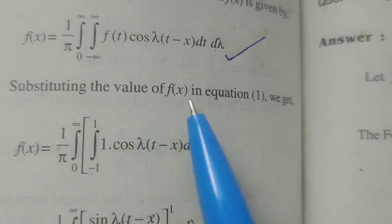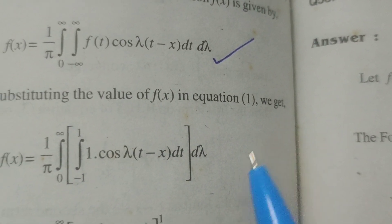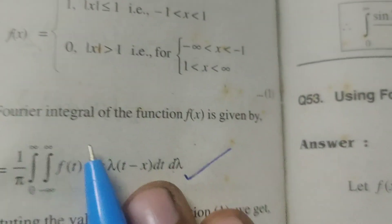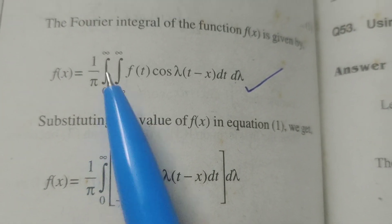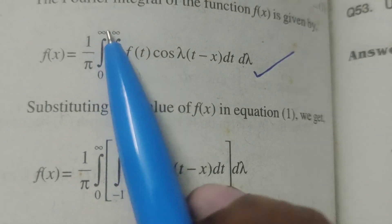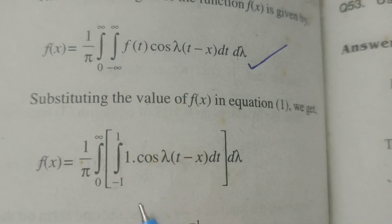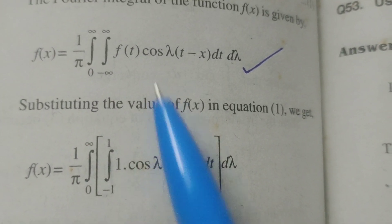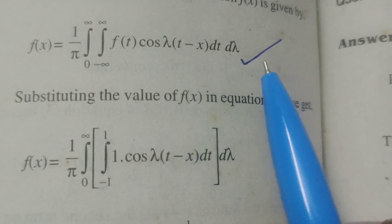Substituting the value of f(x) in equation 1, we get f(x) equals (1/π) · integral from 0 to ∞ of integral from −1 to 1 of cos[λ(t − x)] dt dλ.